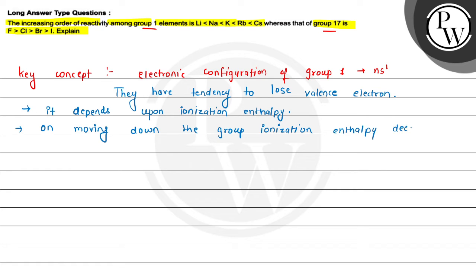Ionization enthalpy decreases because on going down the group, shells keep getting added. As shells are added, the attraction of the nuclear charge towards the outermost shell decreases. If that attraction decreases, the tendency to lose electrons increases. That is why on moving down the group, ionization enthalpy decreases and due to this the reactivity increases in the order: lithium less than sodium less than potassium less than rubidium less than cesium.